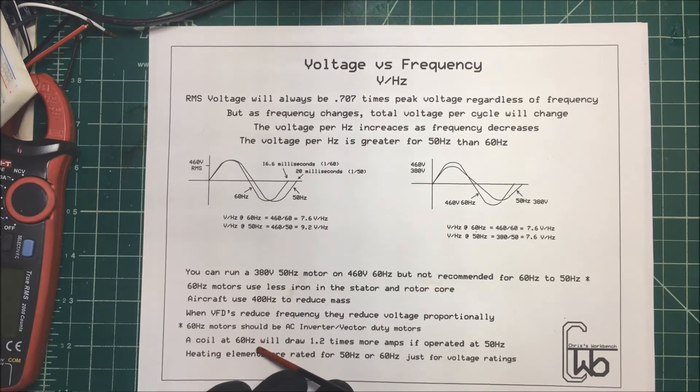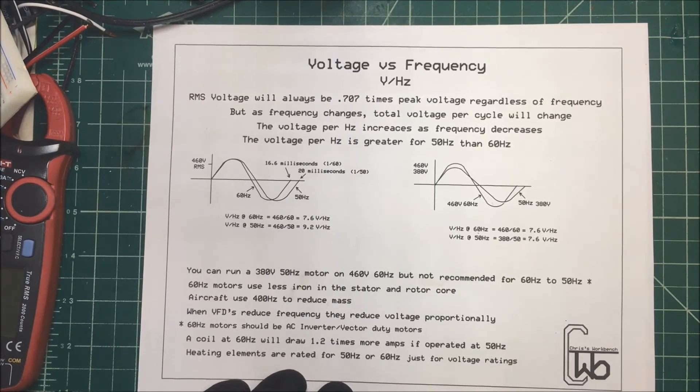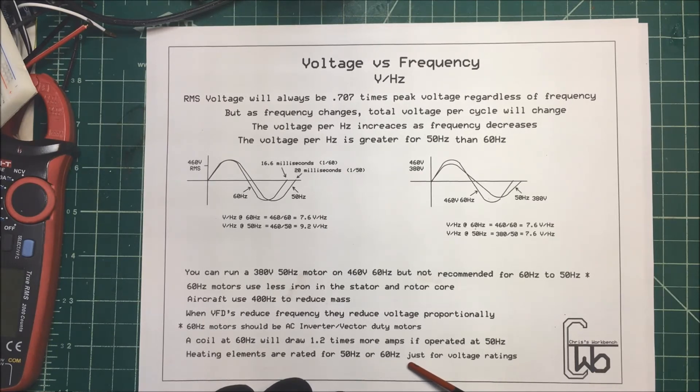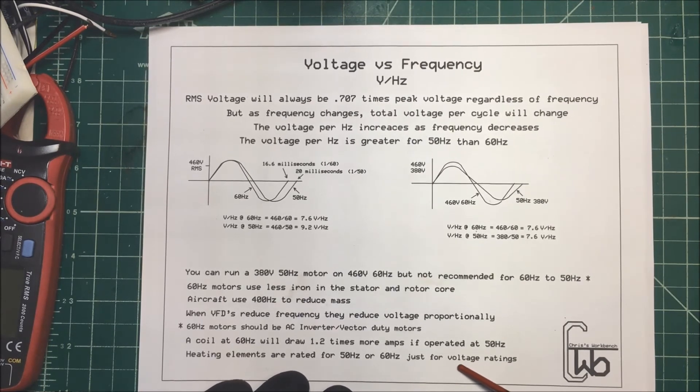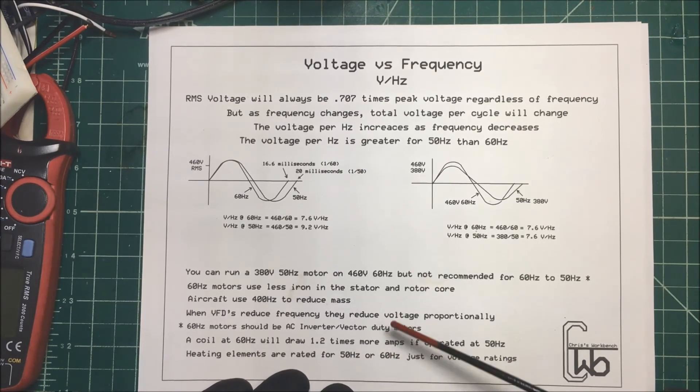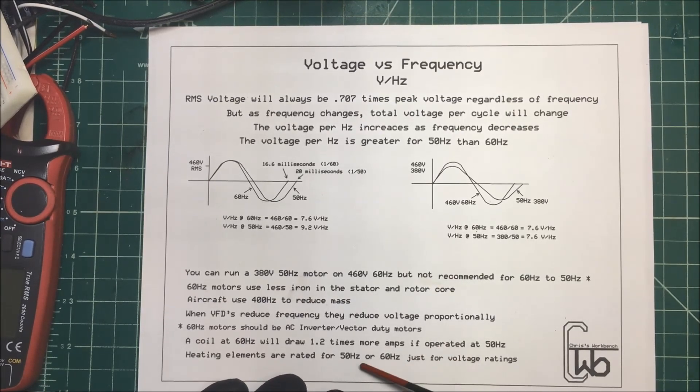So now if you take a coil at 60 hertz, it'll draw 1.2 times more amps if you operate it at 50 hertz. Now heating elements, they're rated at 50 hertz and 60 hertz, but that's just for voltage ratings. The RMS value is going to be the same, so the heating value is going to be the same, but a 50 hertz heater is going to come out at 230 volts and a 60 hertz one is going to come out at 240 volts. It's kind of a typical voltage for an element there.